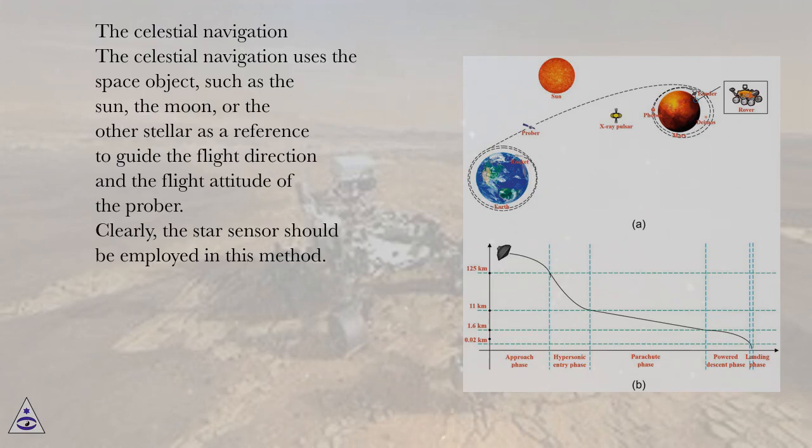The celestial navigation uses space objects such as the sun, the moon, or other stellar bodies as a reference to guide the flight direction and the flight attitude of the prober.